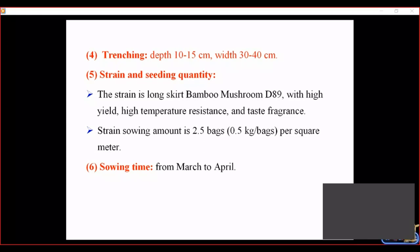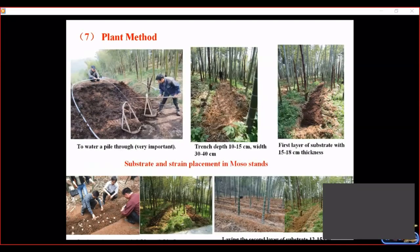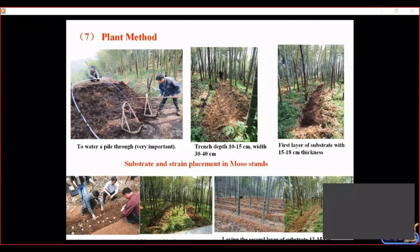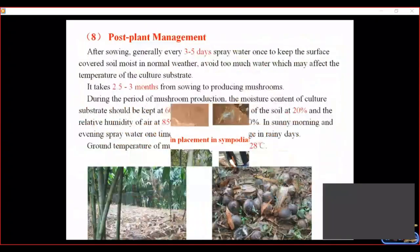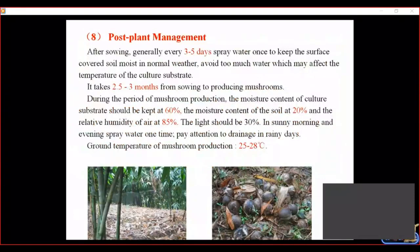Fourth is sowing time: from March to April in China. Fifth is the planting method: first water the pile trench — it is very important to reduce ammonia gas. Then put the first layer of substrate at 18 cm thickness. After that, put the straw, then put the second layer of substrate at 12 cm thickness. Then cover with soil of 3 to 5 cm thickness and water. Sixth, plant management: after sowing, every 3 to 5 days watering once to keep surface soil moisture in normal weather.